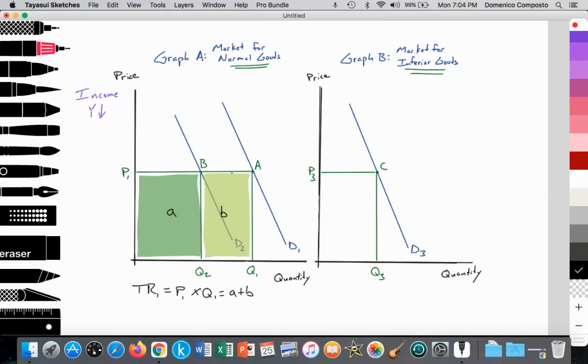But as incomes fall, demand shifts inward. Total revenue for firms offering normal goods will be decreasing. There's no change in price. Price is constant, P1, multiplied by a reduced quantity of Q2, which is equal to area A. So here we see that as incomes fall, demand for the normal good falls. So that's a positive causal relationship. They move in the same direction. And we also notice that total revenue falls.